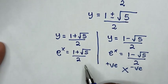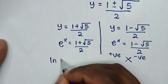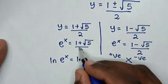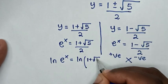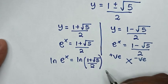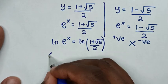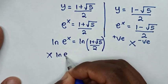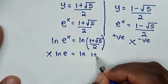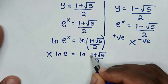From the remaining valid solution, we apply ln to both sides: ln(e power of x) equals ln((1 plus square root of 5) over 2). The power of x moves to the front: x times ln(e) equals ln((1 plus square root of 5) over 2). Since ln(e) equals 1, we get x equals ln((1 plus square root of 5) over 2), which is the final answer.